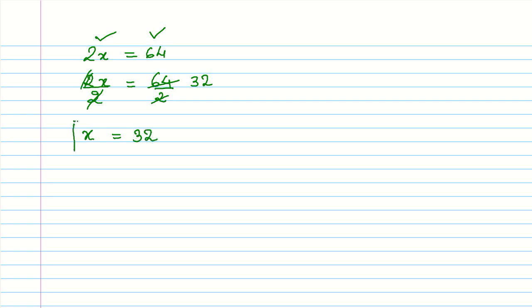So the first number is x equals 32. What about the other number? The other number is x plus 10. So that is 32 plus 10, which is 42. So the two numbers are 32 and 42.